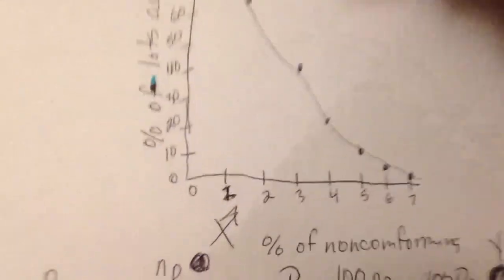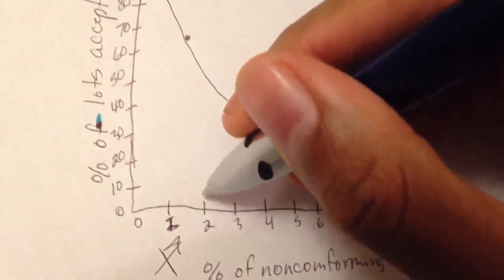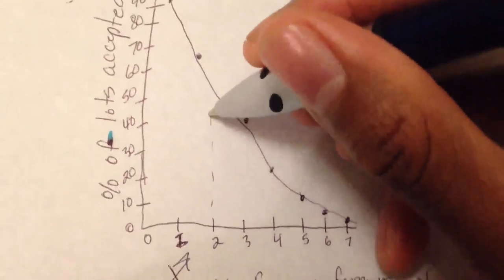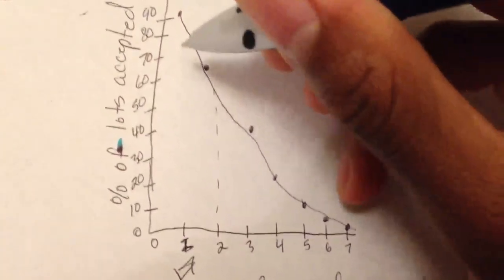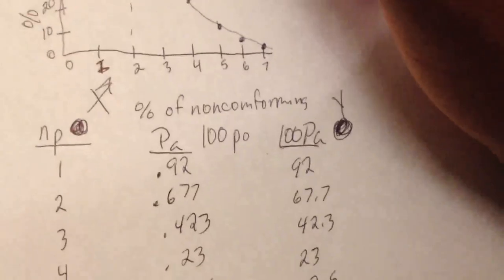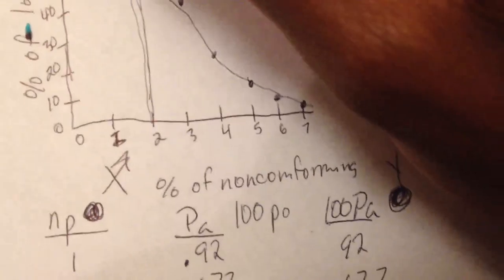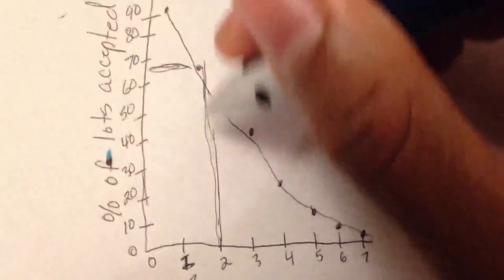And that's pretty much it. So let's say if you had 2% of non-conformities, you go up to this line, I'm way off this should have been like right here, and then you go over. And you see with 2% non-conformities there's a 67.7% chance that this whole lot will be accepted or not.